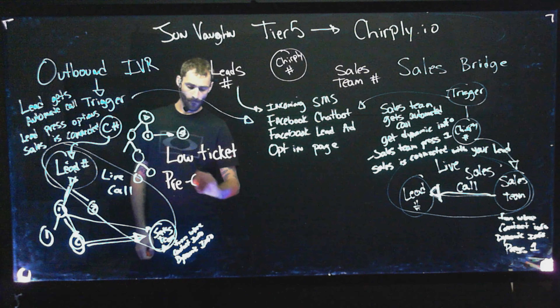Versus the sales bridge — I use this for high ticket sales. If I'm selling a $3,000 or $5,000 program, when my lead comes in I don't want my lead to get an automation. I want to automate the process, but I want my sales team to get information about this high-ticket lead. When my lead answers the phone call, I want them on a live call with a live person immediately — not experiencing any automation. I want all the automation to happen on my sales team's side.